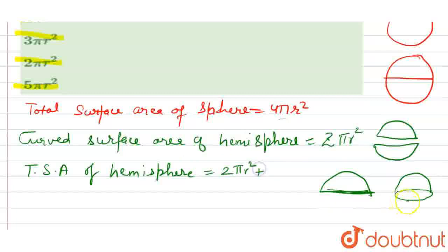The area of the circle is πr². So the total surface area of the hemisphere becomes 3πr². The curved surface area of hemisphere plus the area of the circle.